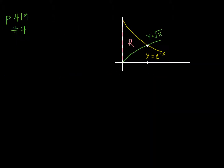We'll start with number 4 from page 419. Here we have a region R that is bounded by the graphs of y equals square root of x, y equals e to the negative x, and the y-axis. Here is square root of x, here is e to the negative x, and here is the y-axis. There's my region R.